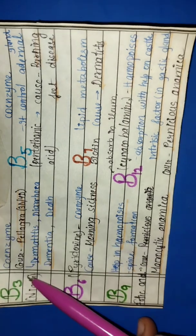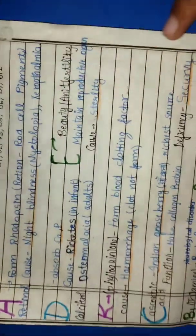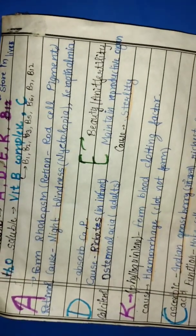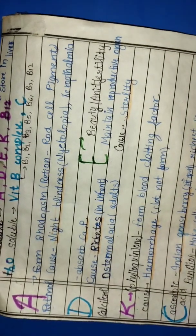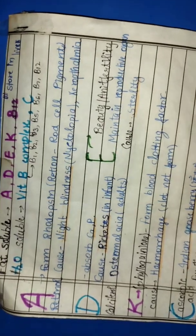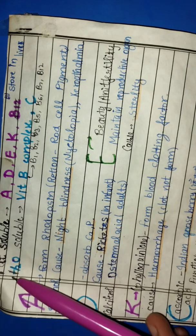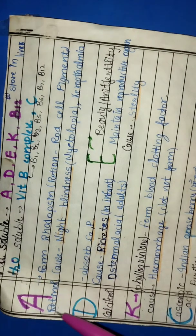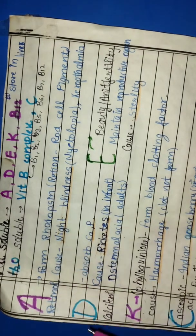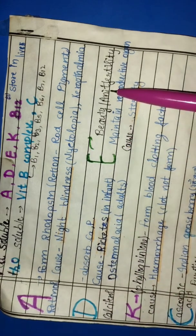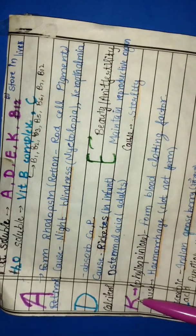B and C are soluble in water and the rest are fat soluble. Vitamin A, Retinol, Night Blindness. Vitamin D, Rickets. Vitamin E, Infertility. Vitamin K, Hemorrhage.